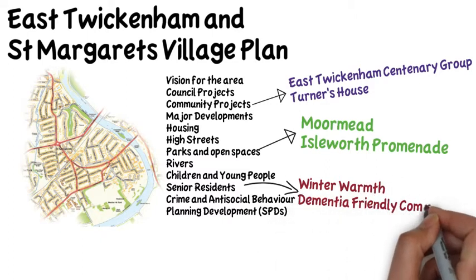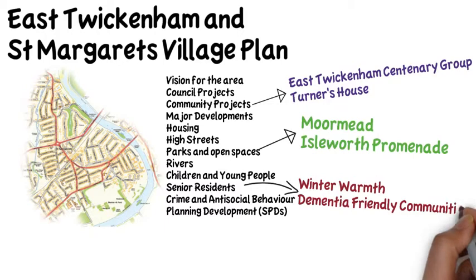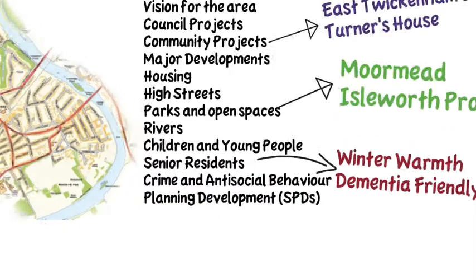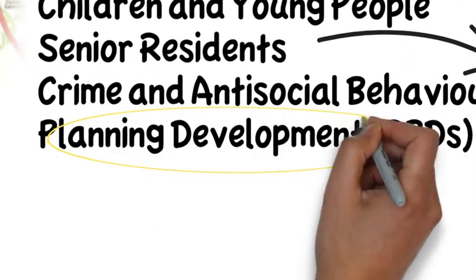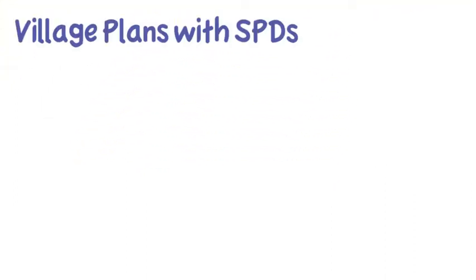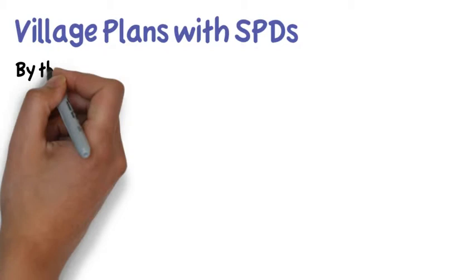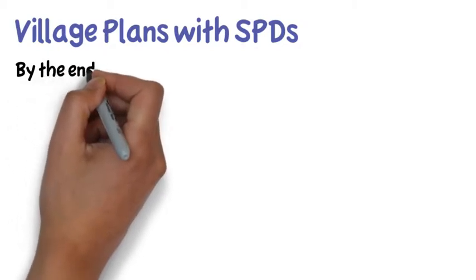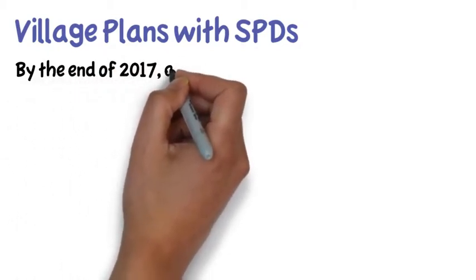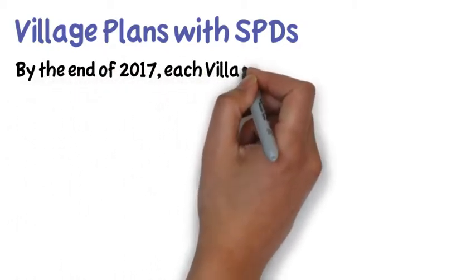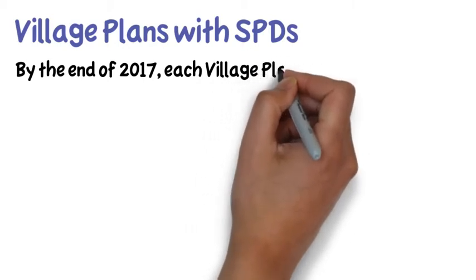There is a new section in each village plan relating to planning control. This is called a supplementary planning document. The SPD, as it is known, is a specific part of the village plan which the planning committee at the council must refer to when making planning decisions.